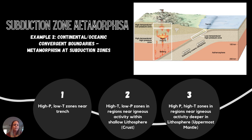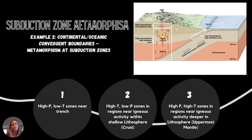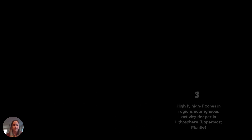Looking at this diagram more closely: the high pressure, low temperature metamorphism is near the trench where the two plates meet, similar to continental-continental collision. The high temperature, low pressure zone is basically a contact metamorphism occurrence where rising magma comes up in the shallow crust. The high pressure, high temperature zone is deeper in the crust where plates are colliding and magma is upwelling.